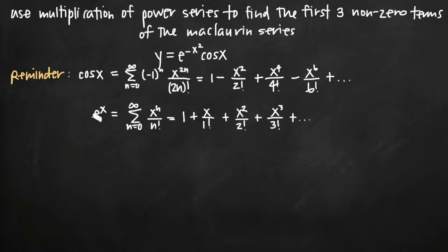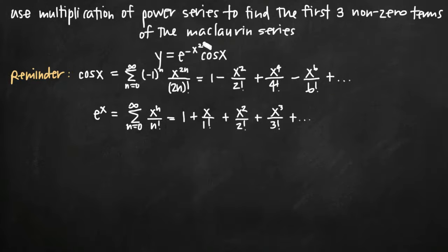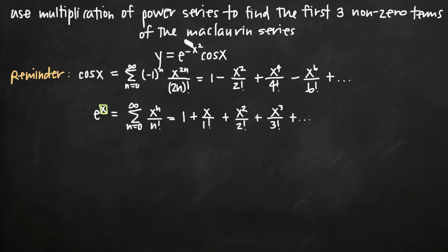Similarly, e to the x is already a well-known Maclaurin series and we have its sum notation as well. Now our function is not exactly e to the x — it's e to the negative x squared. So we need to realize that e to the negative x squared is the same as e to the x, except that in the place of x we've substituted negative x squared.